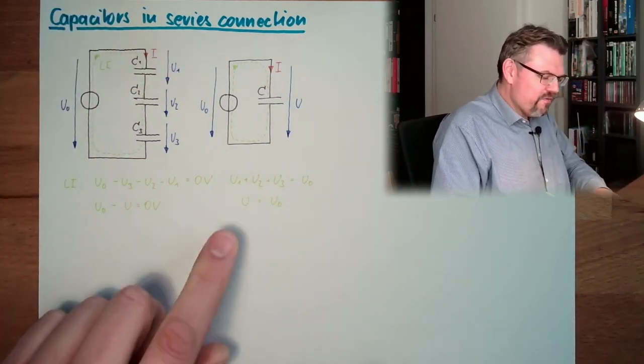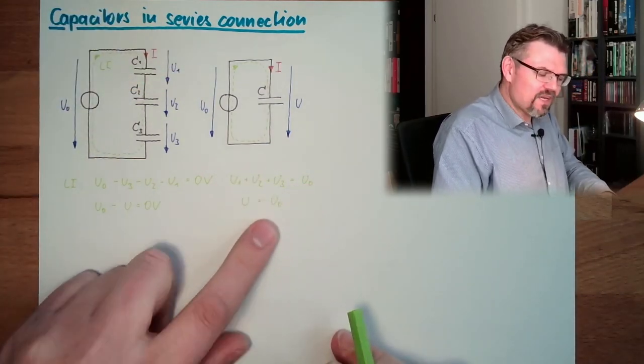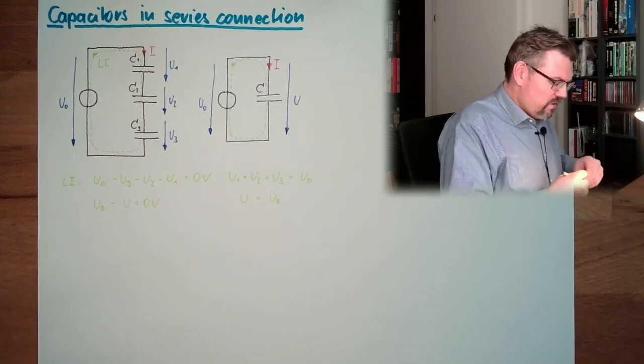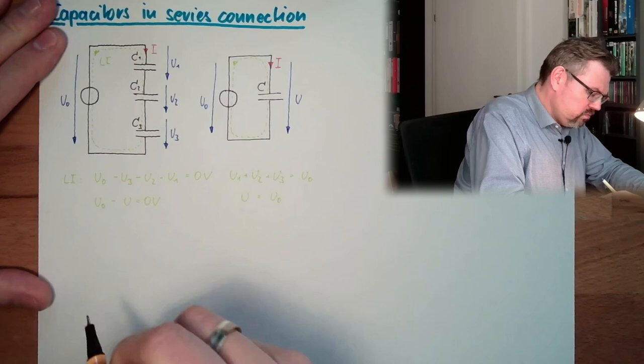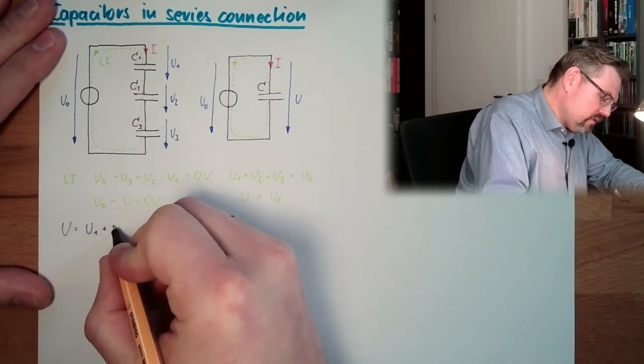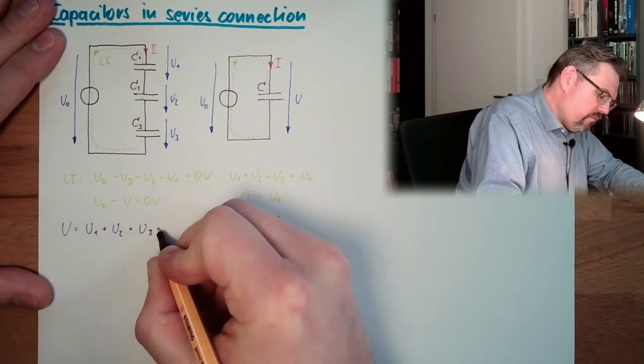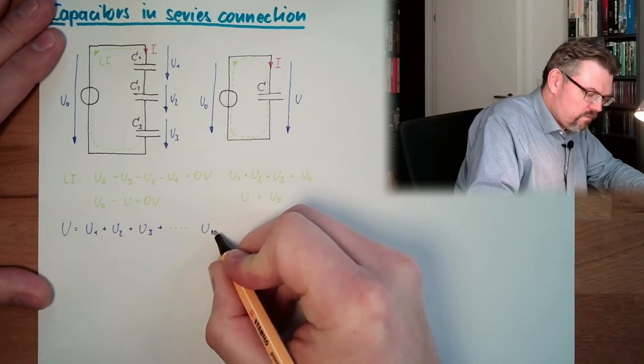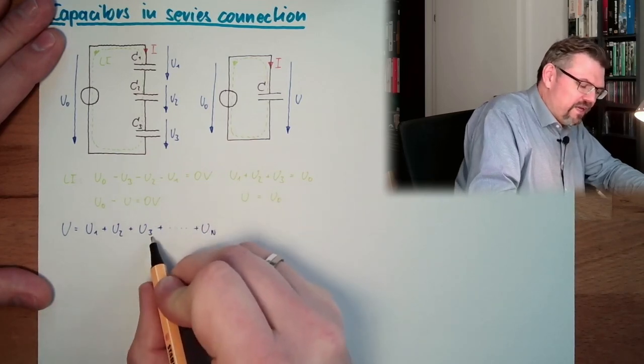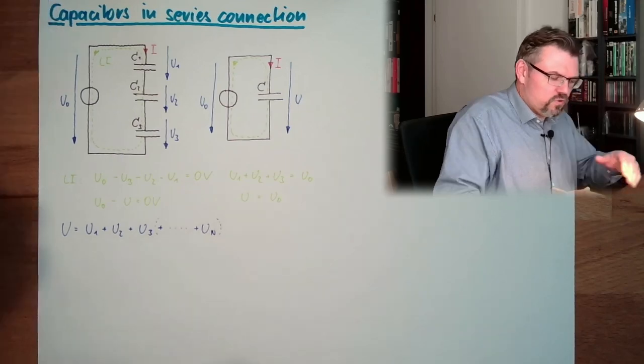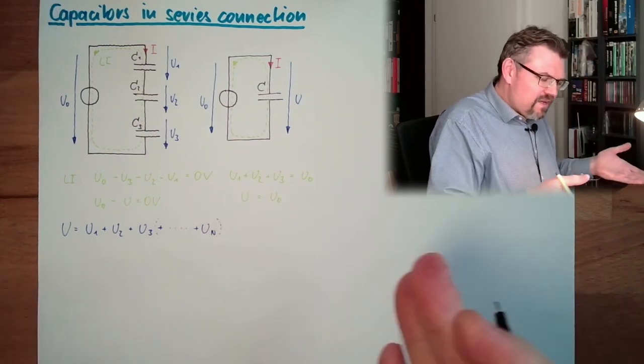We can immediately follow, that if both things are U0, then there must be the rule, that u equals u1, plus u2, plus u3, plus and so on, u n. So this is the extension now, because if there are more, it's alike.